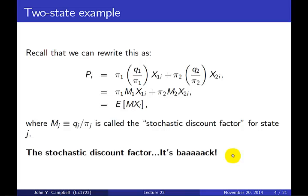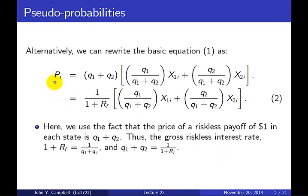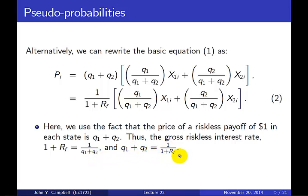We're actually going to do a different but related trick. Instead of multiplying and dividing by probability, we multiply and divide by the sum of the state prices, q1 plus q2. Recall that the price of a riskless payoff — one dollar in each state — is q1 plus q2. That means the gross riskless interest rate 1 plus rf is the reciprocal of q1 plus q2, or equivalently q1 plus q2 equals 1 over 1 plus rf.